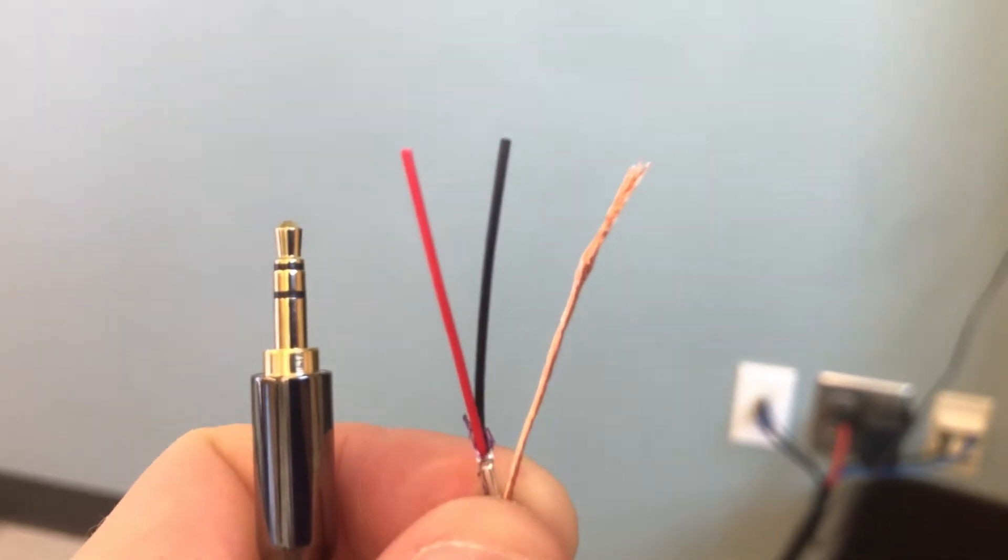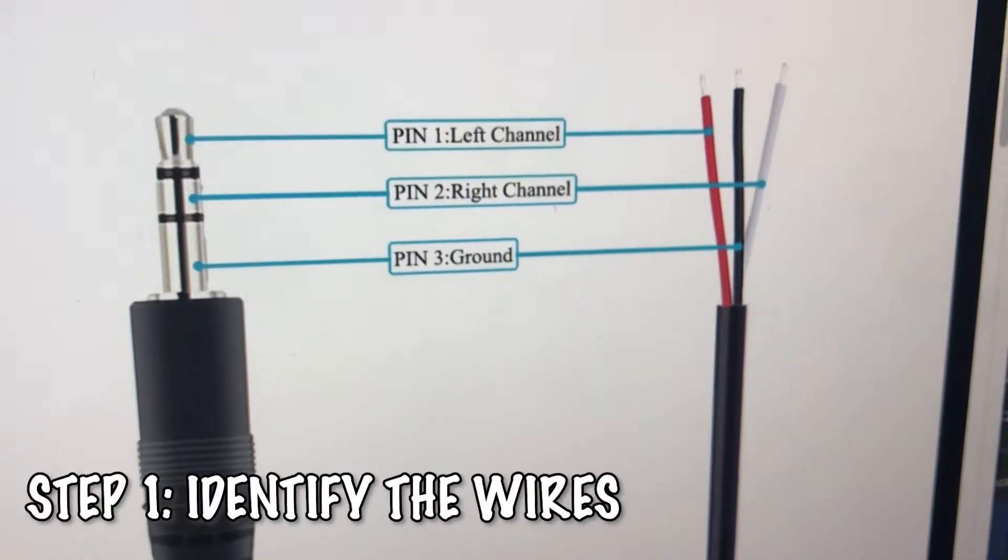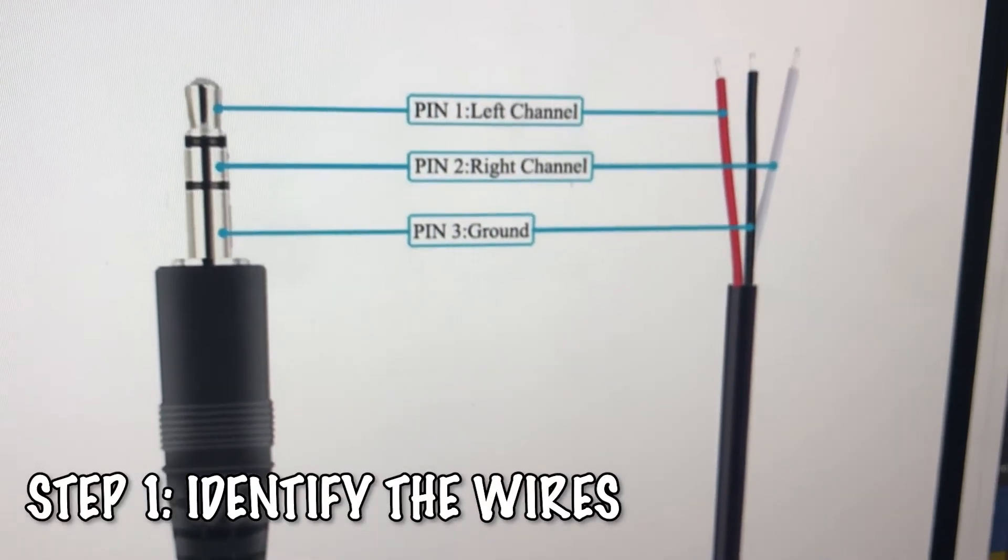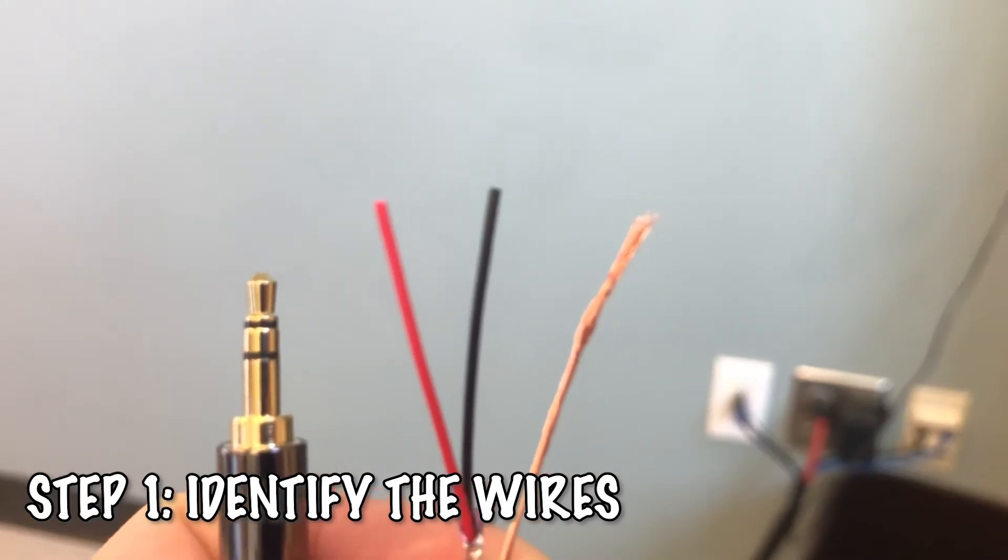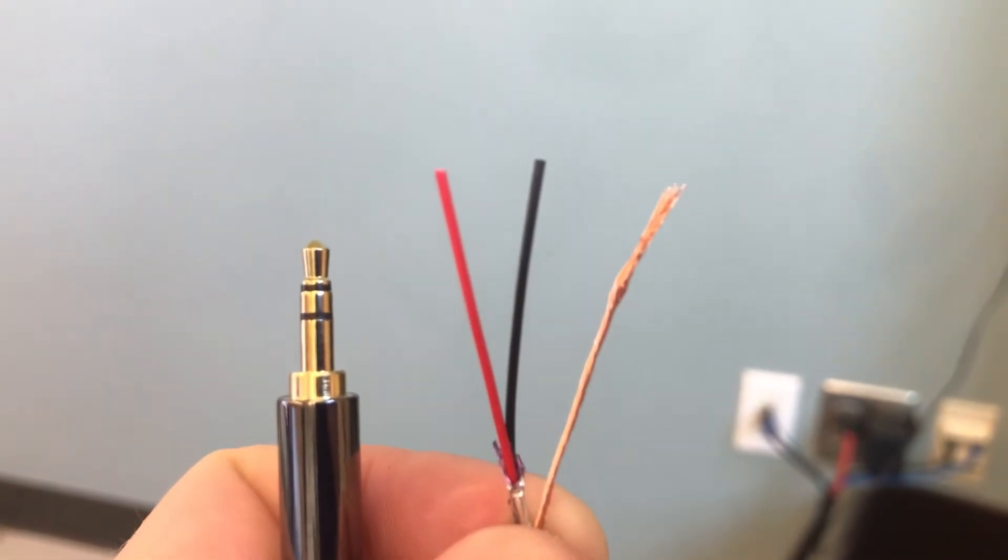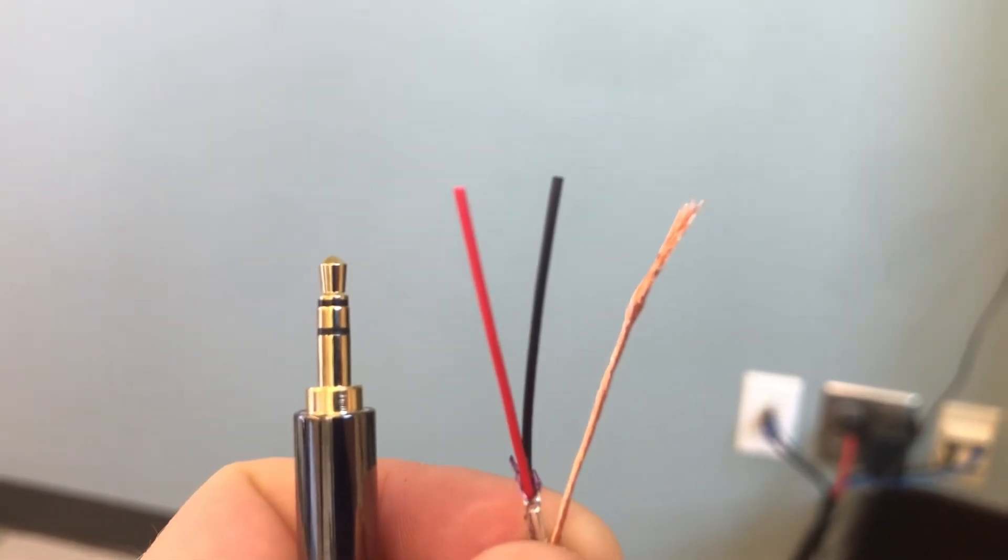Find out which wires correspond to the correct connections. On mine, the left channel is the red wire, the right channel is the black wire, and the shared ground is the bare wire. It may be different on yours, so check with a multimeter.